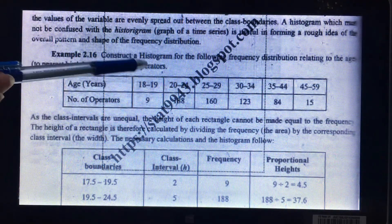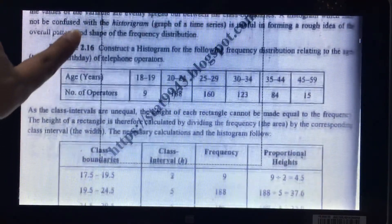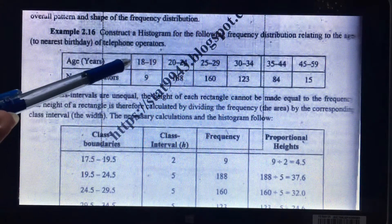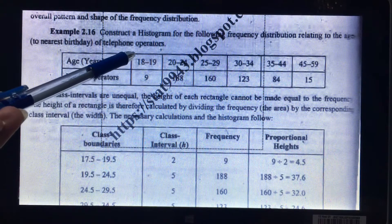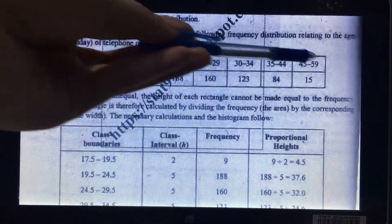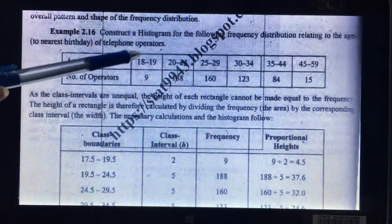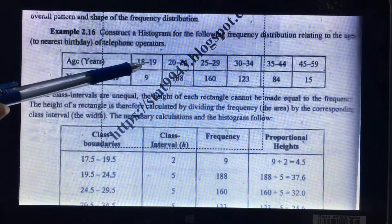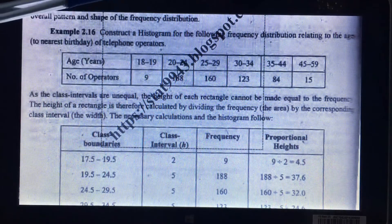So for the histogram, as we know, along the x-axis I have to take some class boundaries. So first of all I am going to make class boundaries of these class limits. You know how to make the class boundaries.